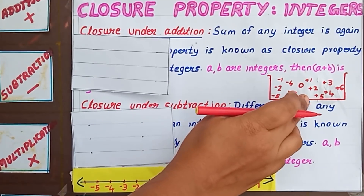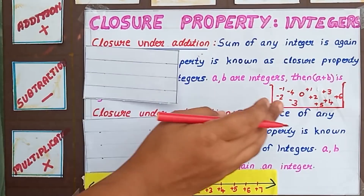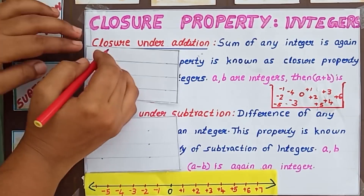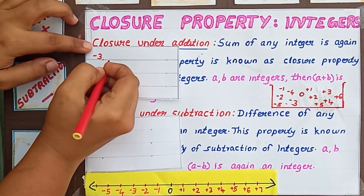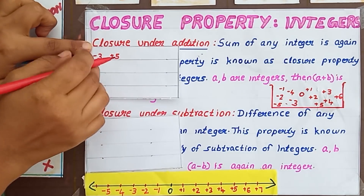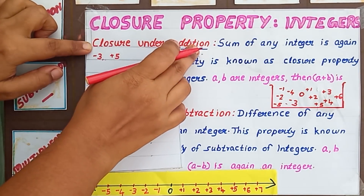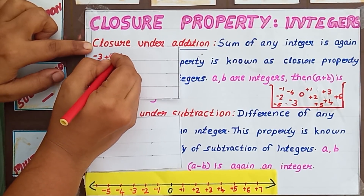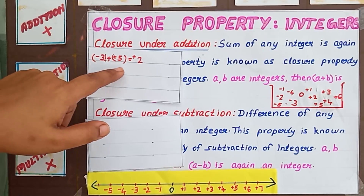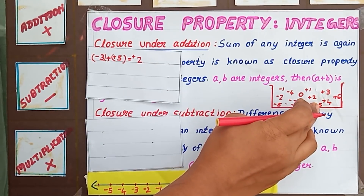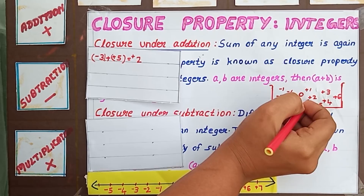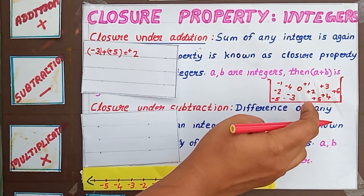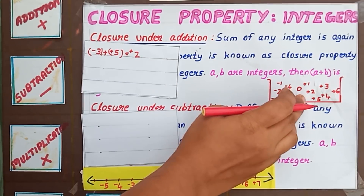I am taking two numbers: -3 and +5. Since we are dealing with closure under addition, find the sum of these two numbers. -3 + 5 = +2. Can you see +2 here in this basket? Yes, you can see +2 here. We selected these two numbers from this basket, found the sum, and the answer is also here.